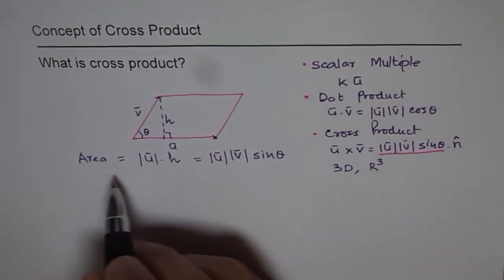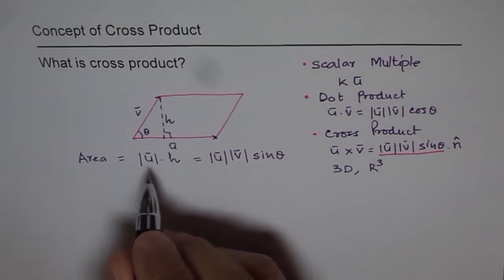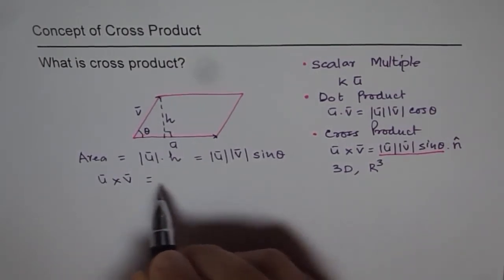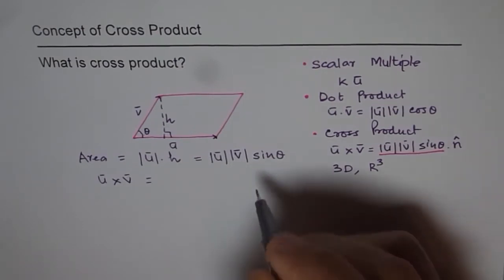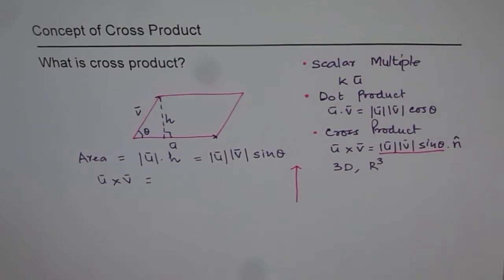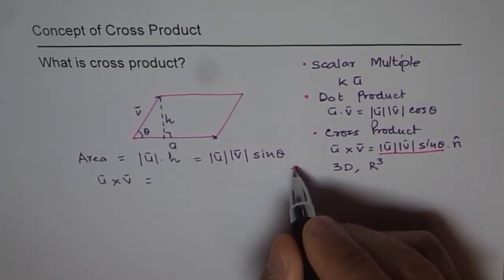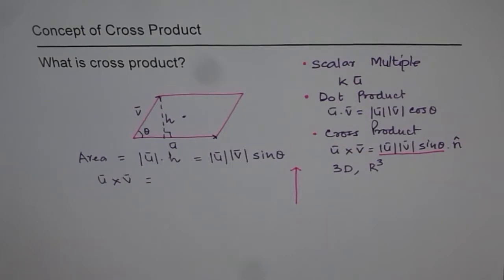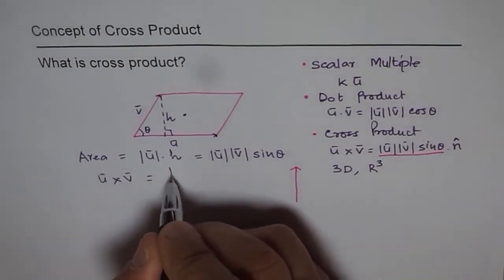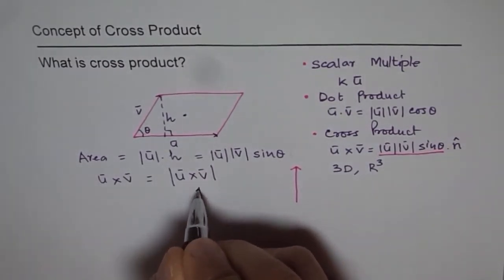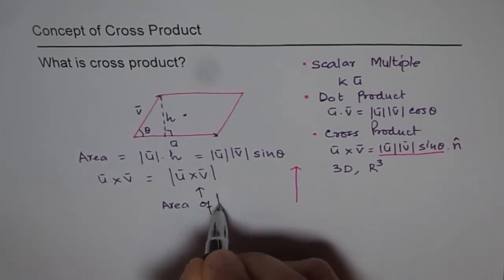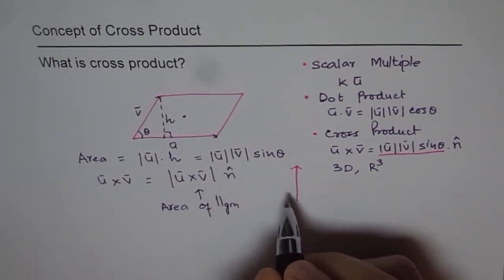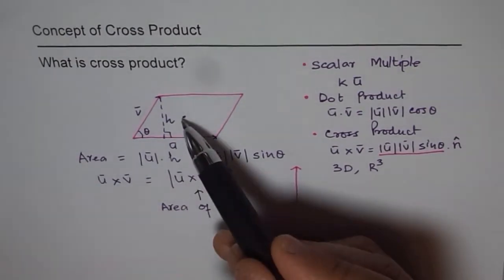As I said, the direction of cross product will be normal to this. If I am trying to say vector U cross vector V, then I am saying it can be represented by an arrow. Let me draw an arrow now. It can be represented by an arrow whose length is equal to area of this parallelogram. I think you get the concept. The length, that means the magnitude of U cross V is actually equal to area of parallelogram.